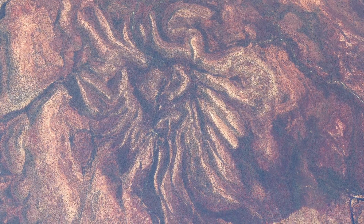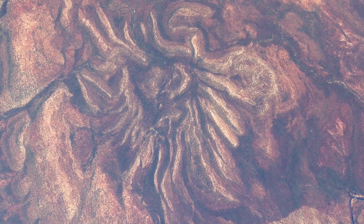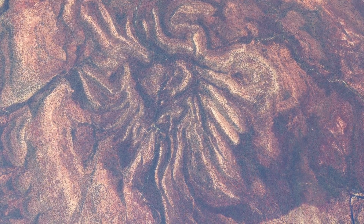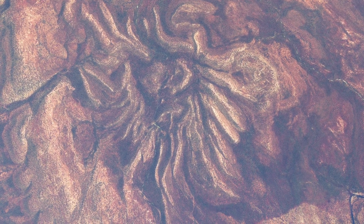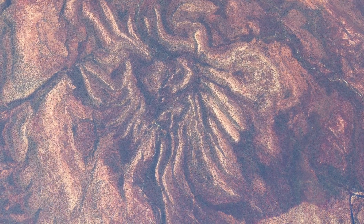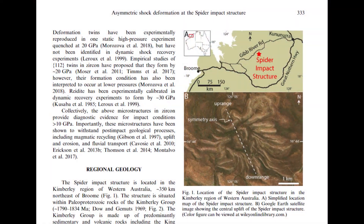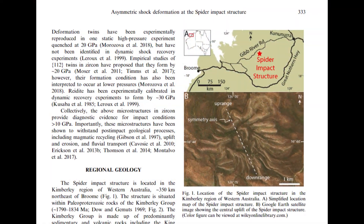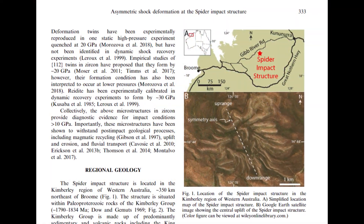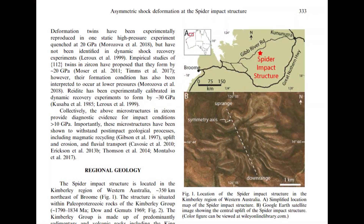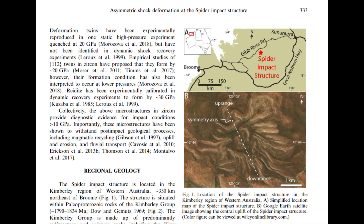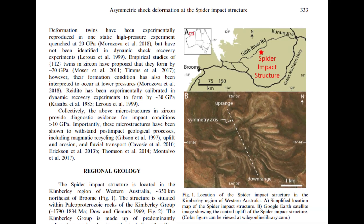In the years that followed, further investigations including remote sensing, geological mapping, and the use of satellite data solidified the understanding that the Spider Structure was indeed an impact crater, albeit one that had undergone significant erosion and deformation over the eons.